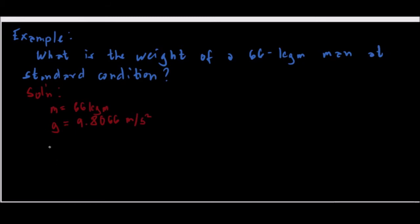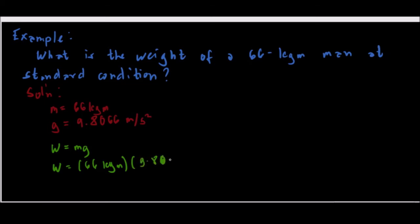Using our formula: weight is equal to mass times the acceleration due to gravity. We have weight; our mass is 66 kilograms mass, and our acceleration is 9.8066 meters per second squared.